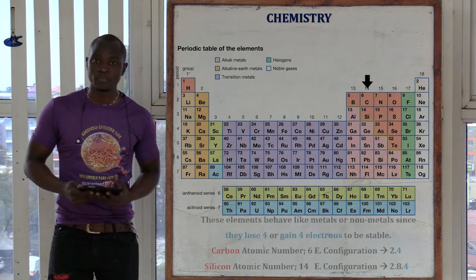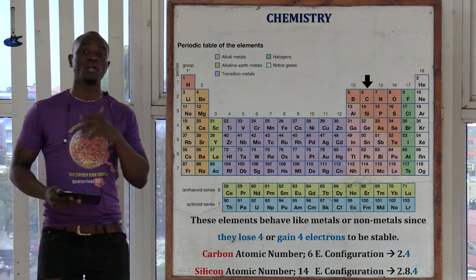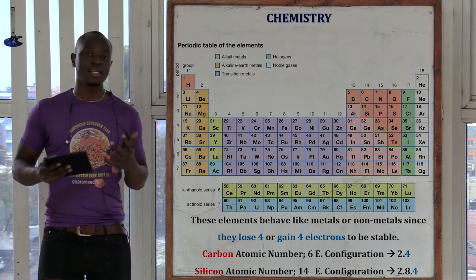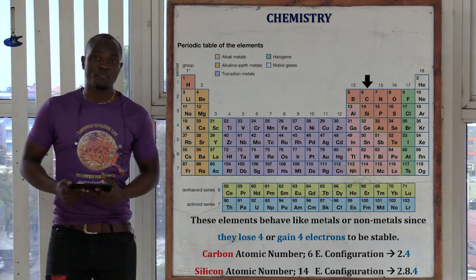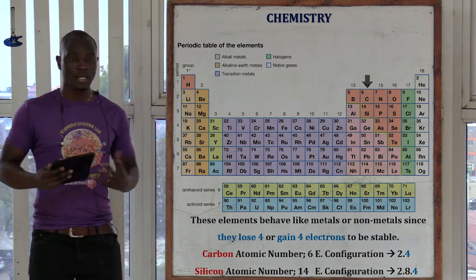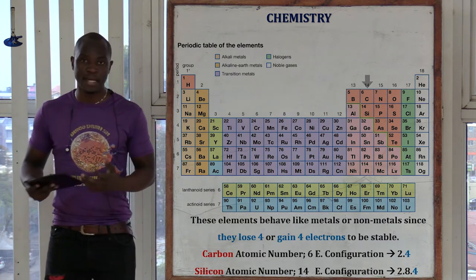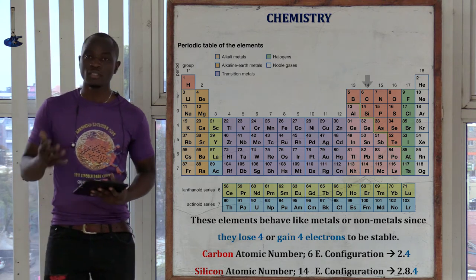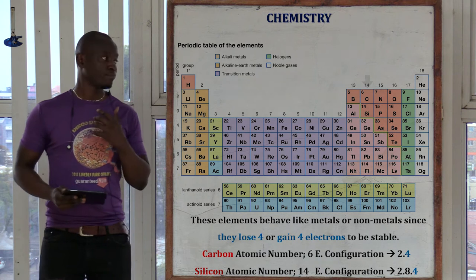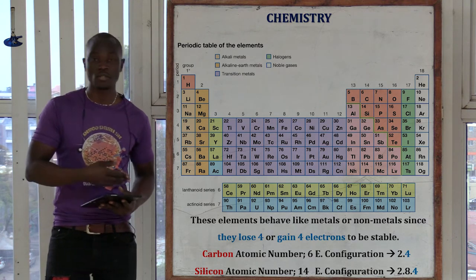Group four comprises carbon and silicon. The name given to that chemical family is charcoals. These elements are also referred to as metalloids because they can either gain four electrons or lose four electrons in order to be stable. Since they can lose four electrons, they behave like metals; since they can gain four electrons, they behave like non-metals. That is why they are called metalloids — they behave like metals or non-metals.